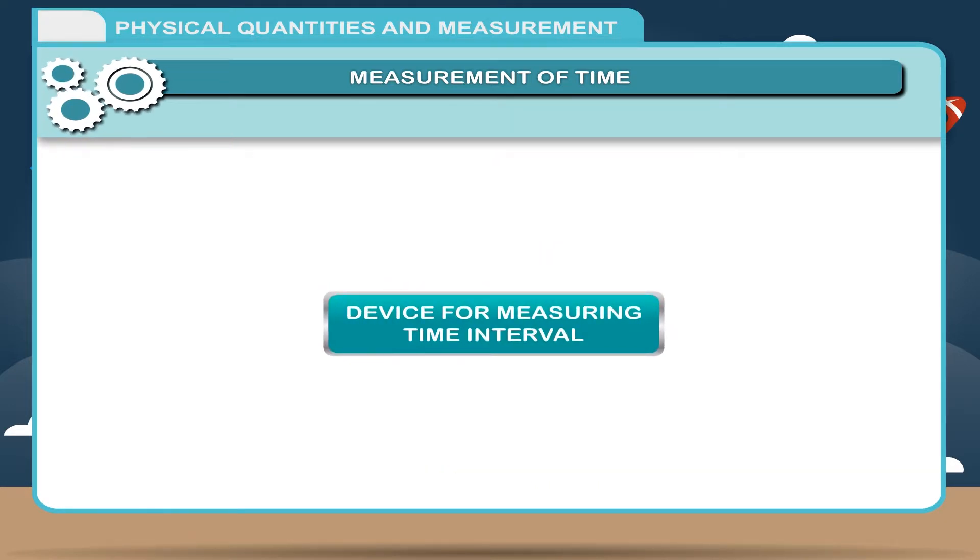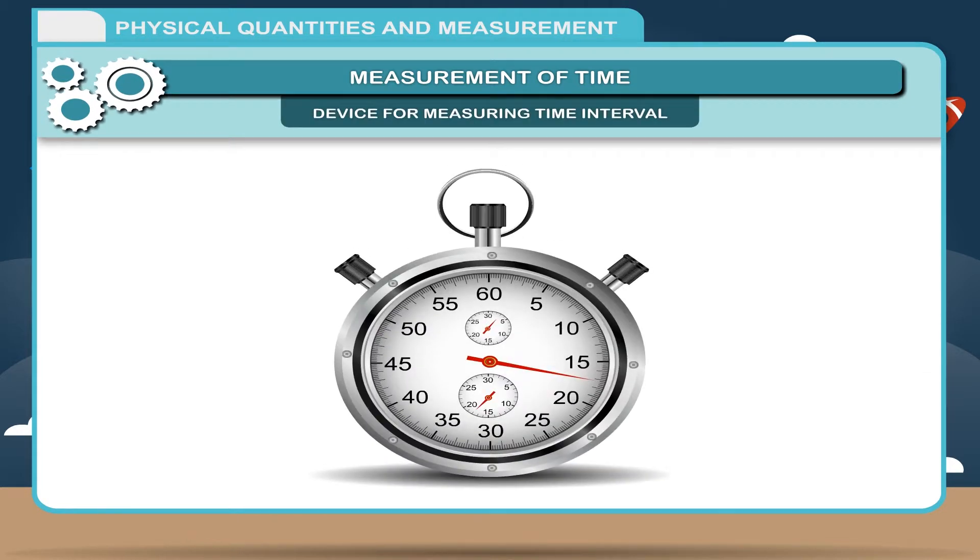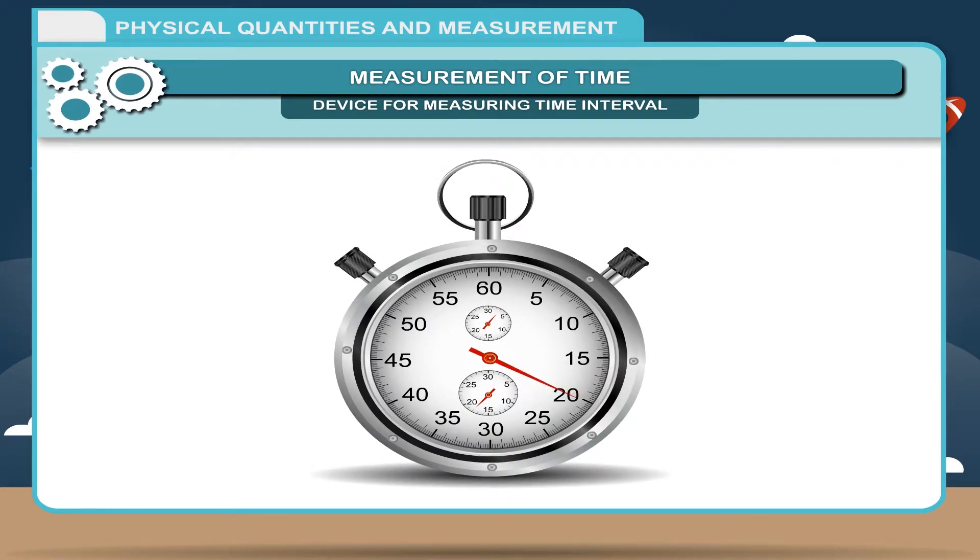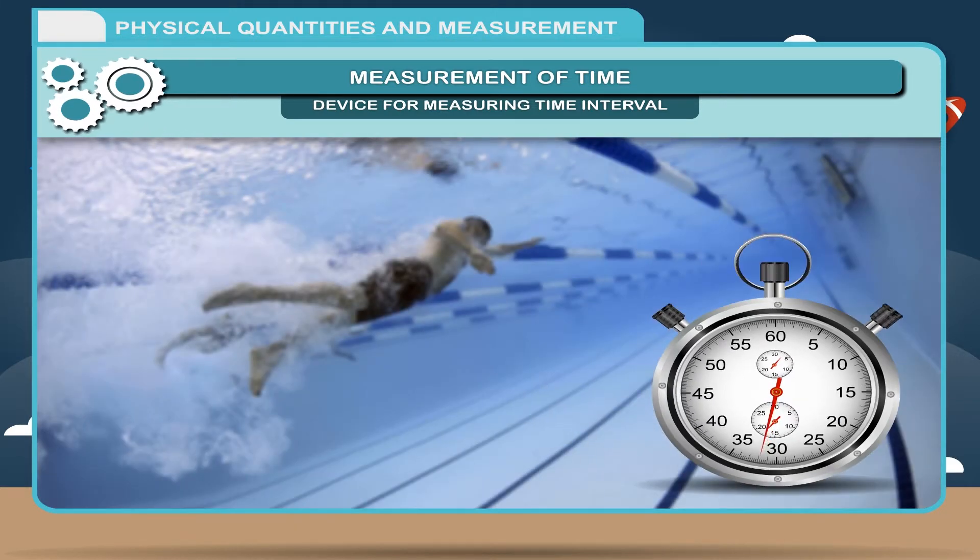Device for measuring time interval. The time interval of an event is measured with the help of stopwatch. It is shown in the adjacent figure. We generally measure the minimum time in one second from our clock. But sometimes, we require to measure one hundredth part of a second.